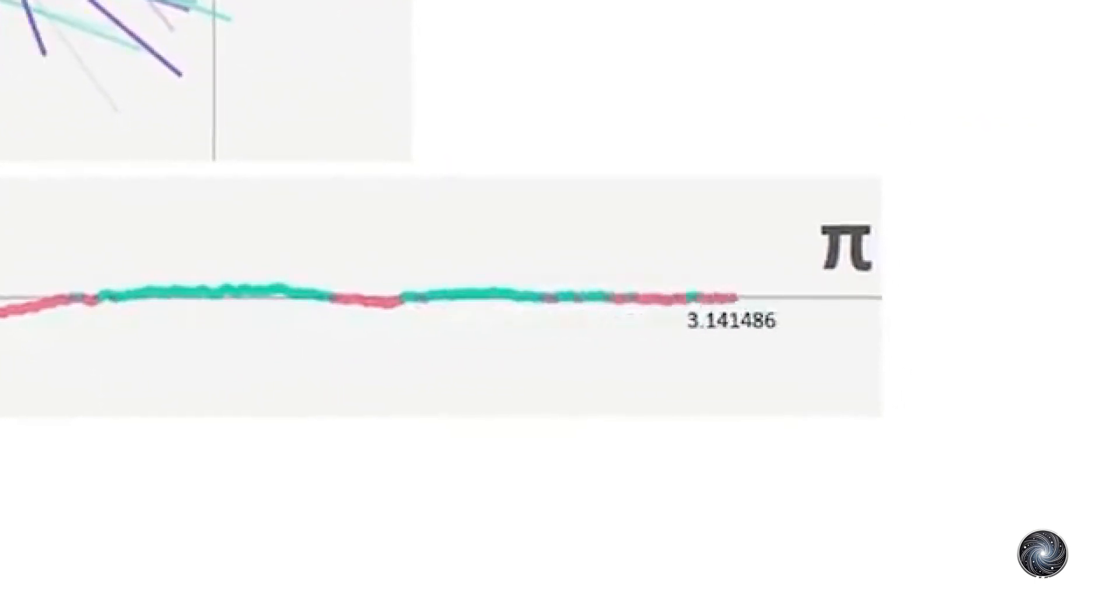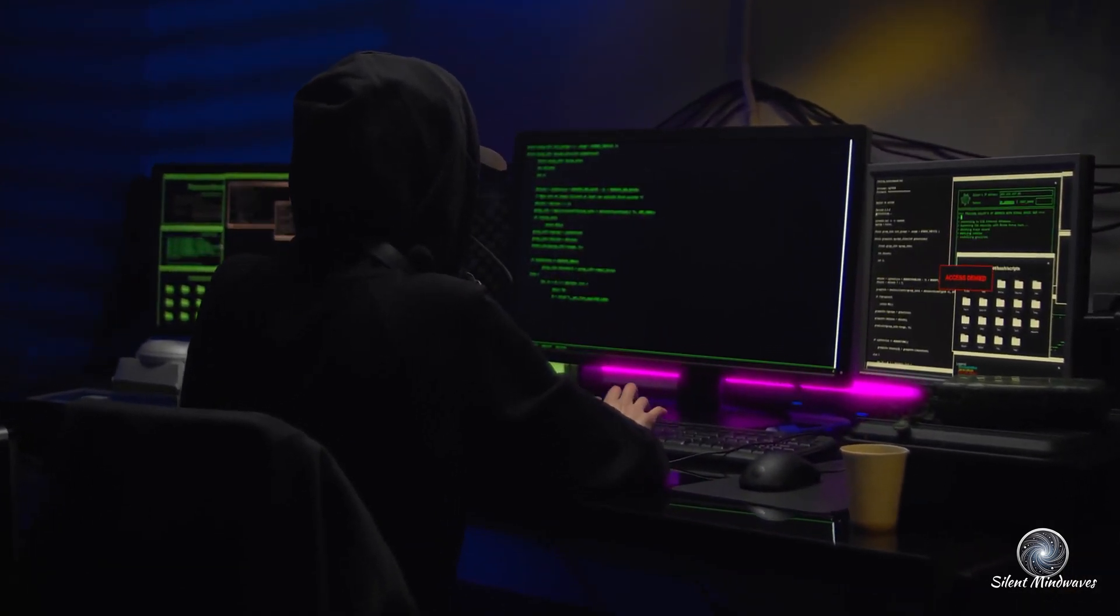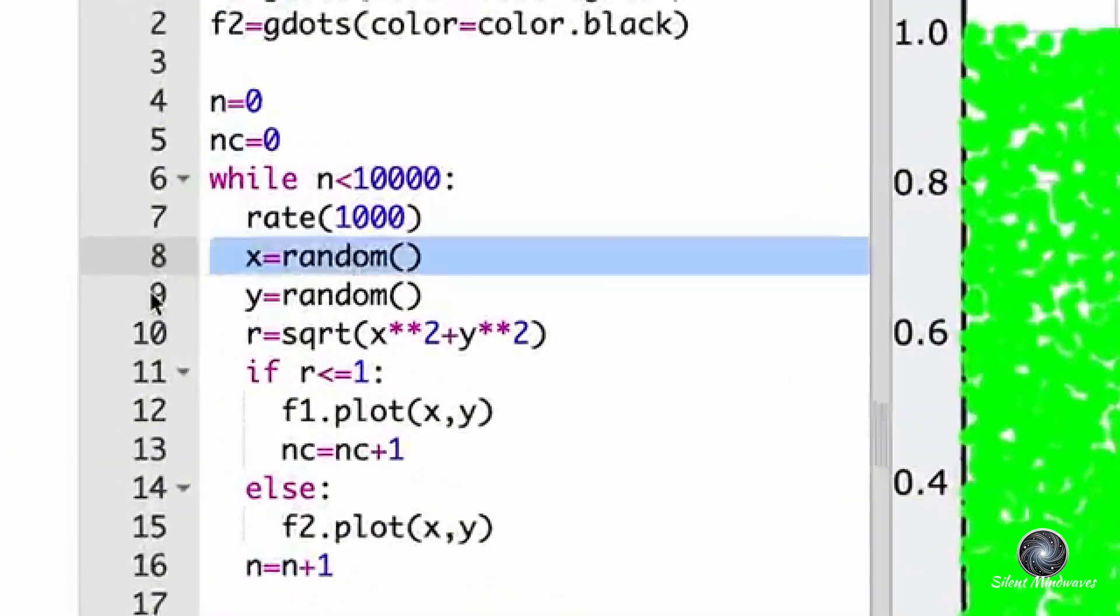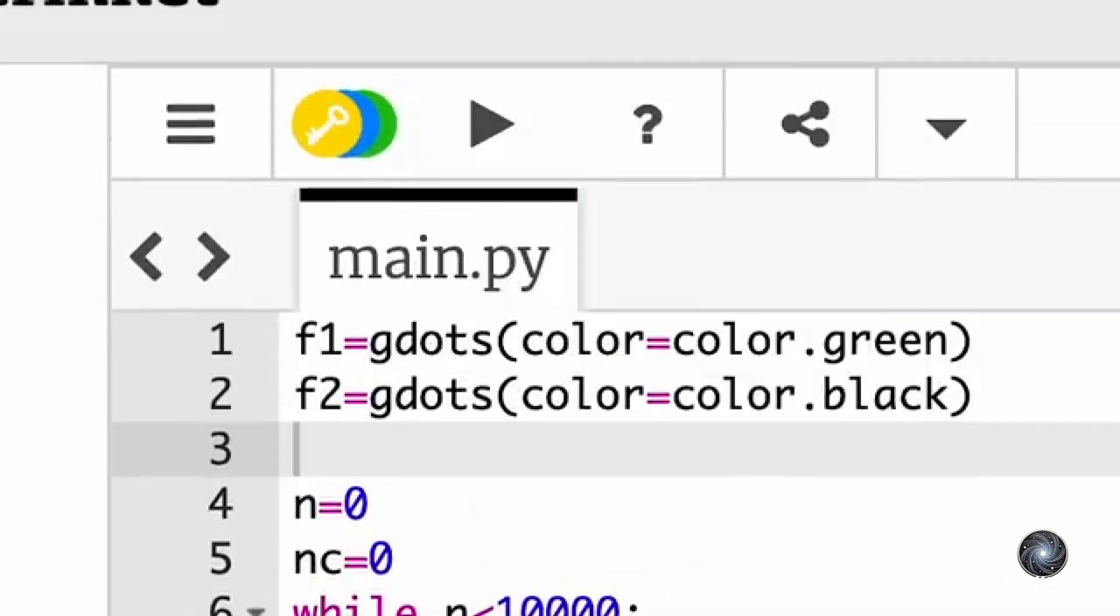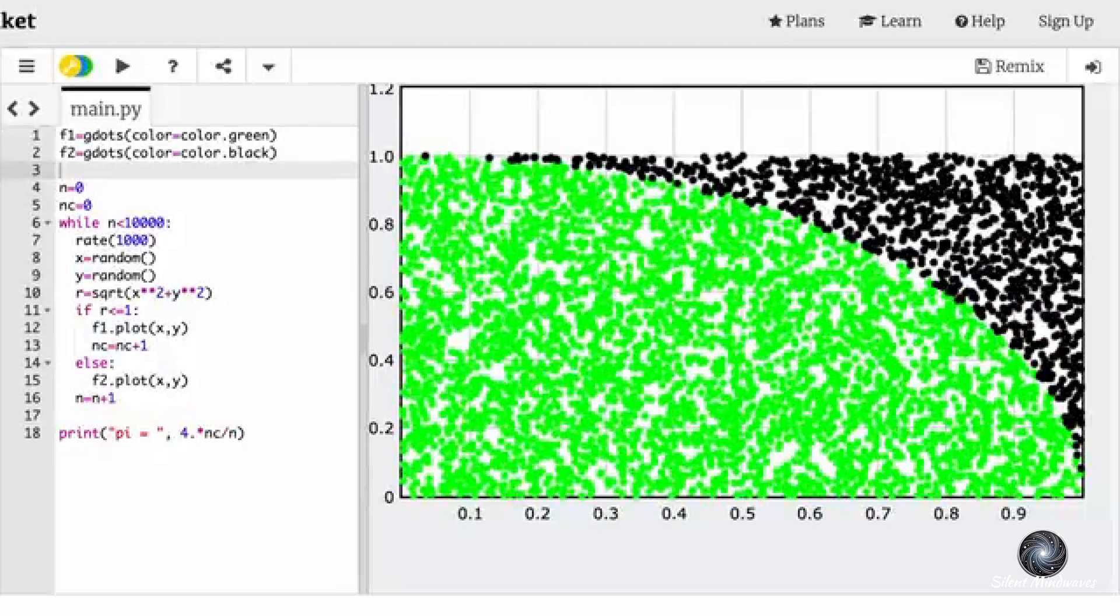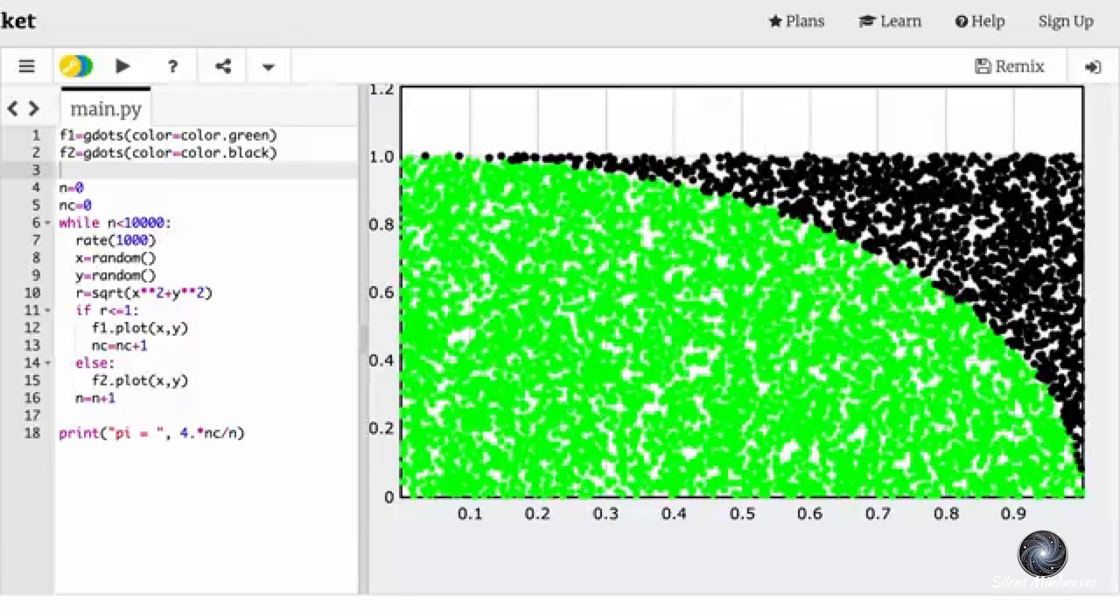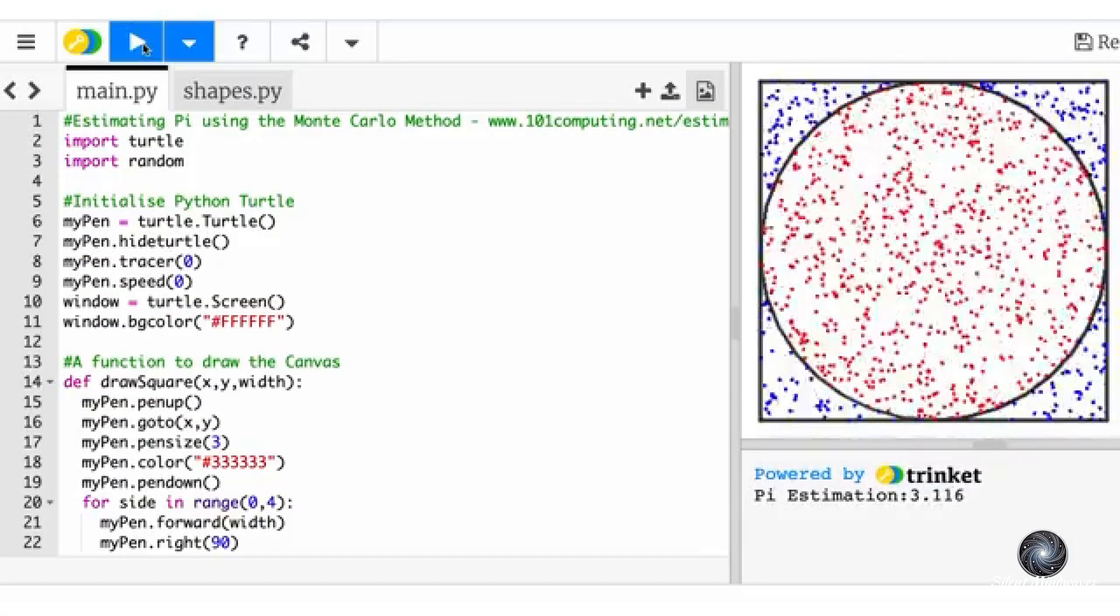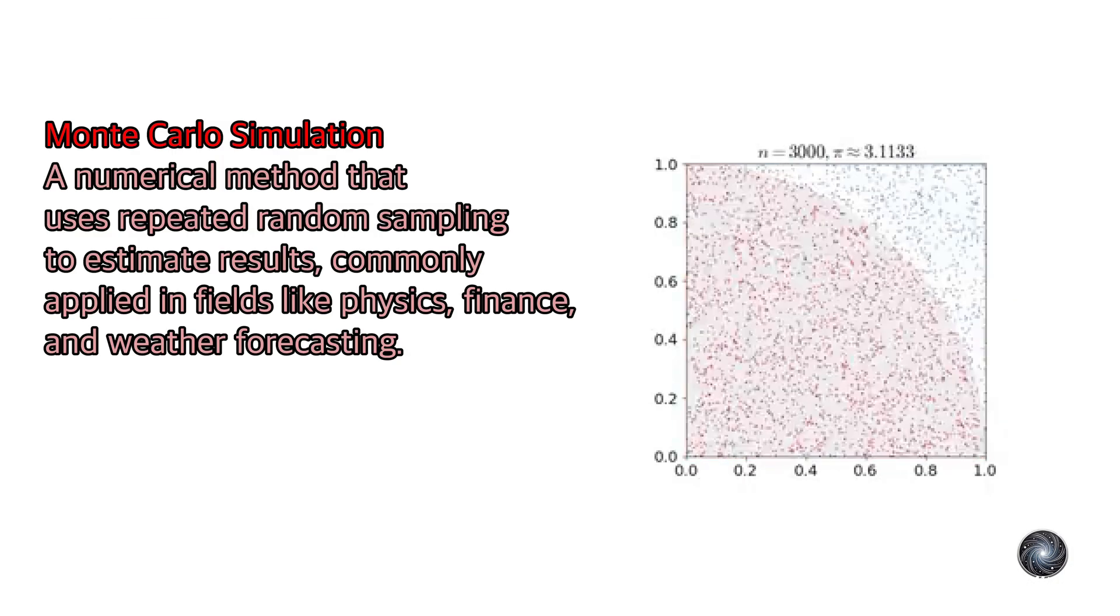Let's go further. Instead of dropping needles, let's have the computer place random points inside a square. Even though the x and y coordinates of these points are random, a pattern begins to emerge. Can you see it? It's a quarter circle. The ratio of the points inside the quarter circle to the total number of points in the square equals pi divided by four. Multiply this ratio by four and you get pi. This method is called the Monte Carlo simulation and is used in many areas of science.